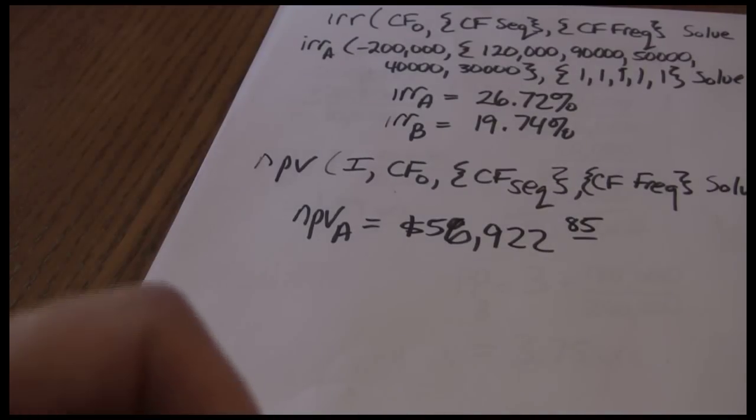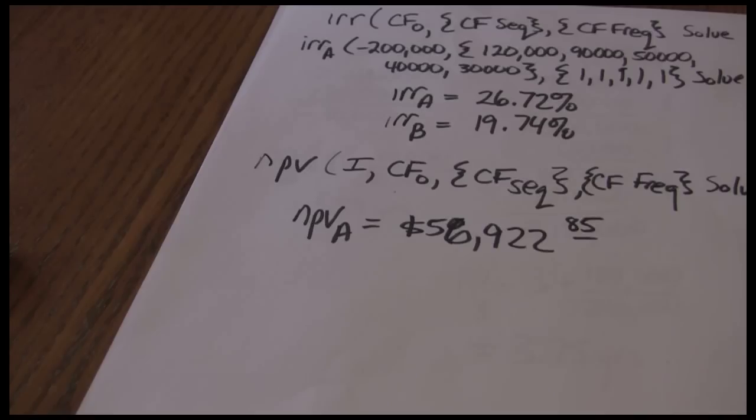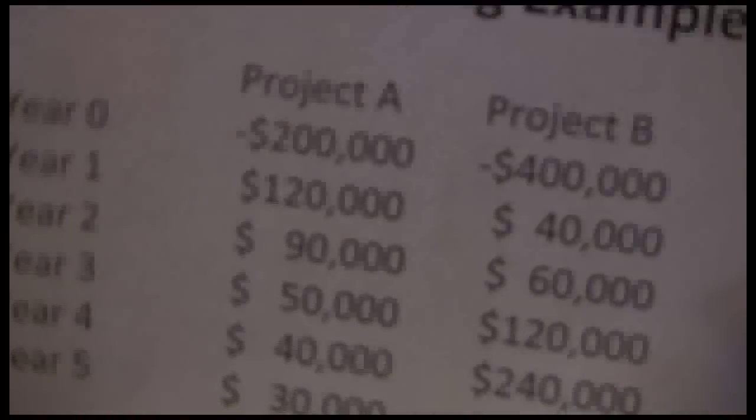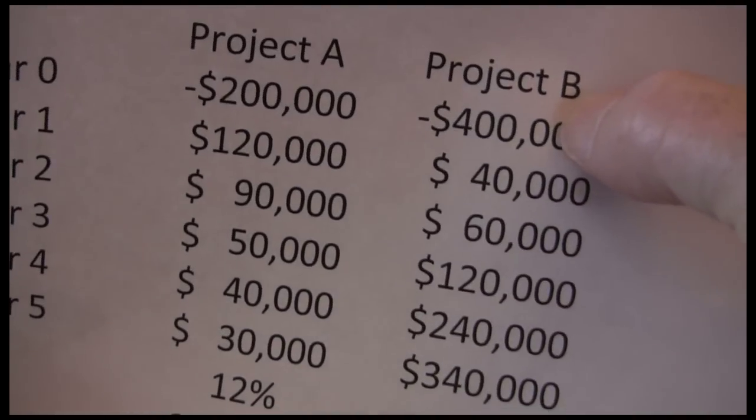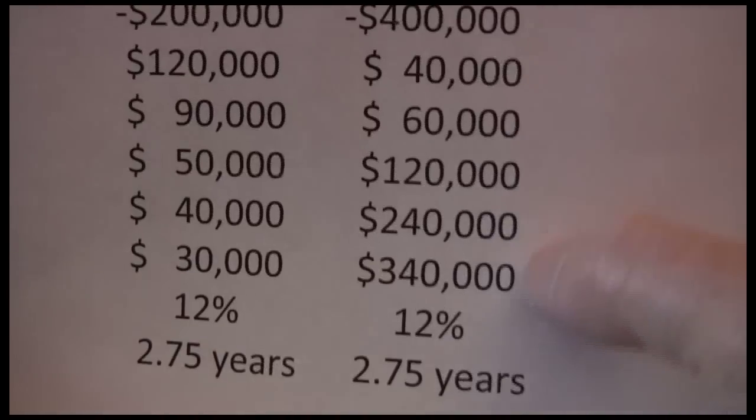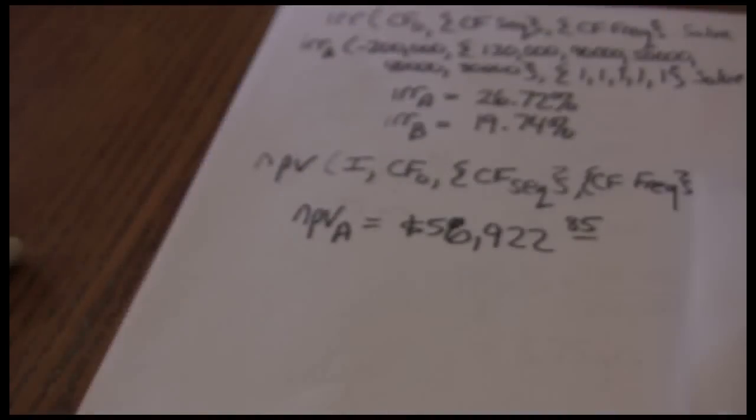Time for net present value for project B. Negative $400,000, or start with 12%, then $400,000 negative, then my sequences and frequencies.